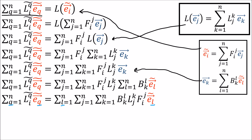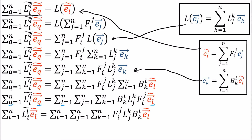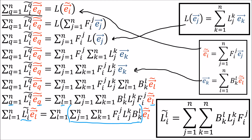We have a linear combination of E-tilde basis vectors on both sides but with different summation indices. Since our choice of letter for the summation doesn't matter, we change all the Q's to L's, and now we can see that the L-tilde coefficients are equal to all of this. To transform matrix coordinates from the old basis to the new basis, we multiply the old matrix by the backward transform on the left and by the forward transform on the right.